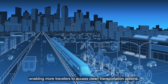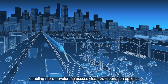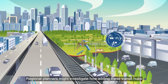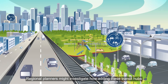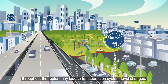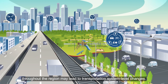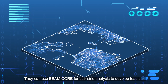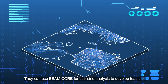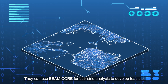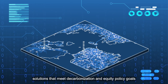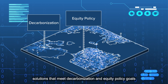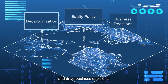This would enable more travelers to access clean transportation options. Regional planners might investigate how adding these transit hubs throughout the region may lead to transportation system-level changes. They can use BeamCore for scenario analysis to develop feasible solutions that meet decarbonization and equity policy goals and drive business decisions.